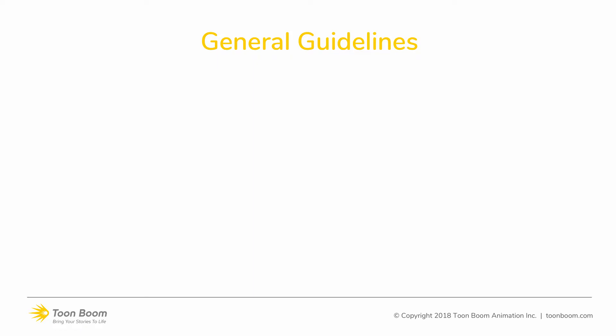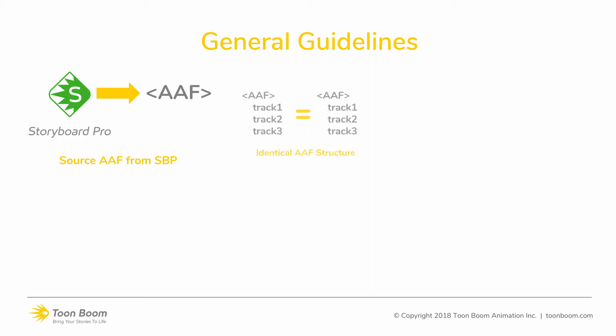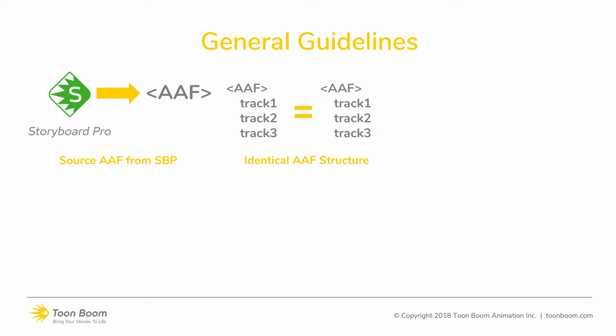Looking at the general guidelines: first of all, the AAF sequence that is imported in Storyboard Pro would have originally been created in Storyboard Pro. So it cannot just be an AAF that you export from any Media Composer project — it really has to be a project that was initially created in Storyboard Pro. The second guideline is that the structure of the composition, meaning the number of video tracks and the order in Media Composer, needs to respect the same structure that was created from Storyboard Pro. If you start changing the structure or the ordering, you will not get the right result conforming back in Storyboard Pro.